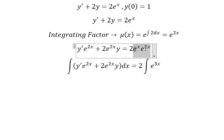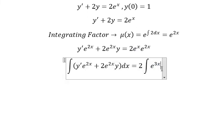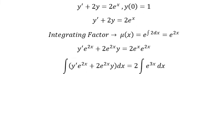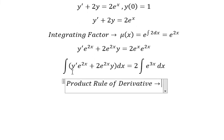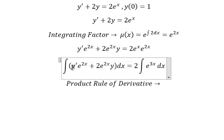If we multiply these together, we can apply the product rule of derivatives. That means we do the first derivative of y multiplied by e to the power of 2x, plus the first derivative of e to the power of 2x multiplied by y.